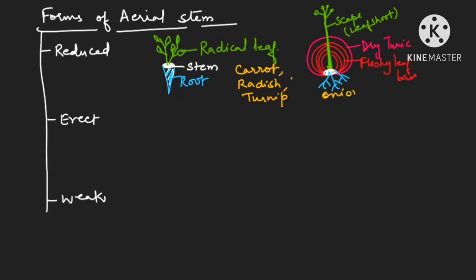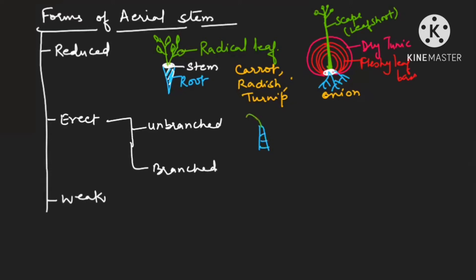Those are the examples having reduced stems. Now let us discuss erect stems. If it is erect, it can be unbranched or branched. An unbranched stem has nodes and internodes with leaves on top, like a palm tree. A second example is bamboo, which has solid nodes but hollow internodes.